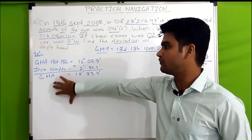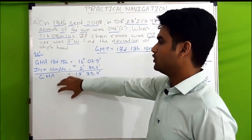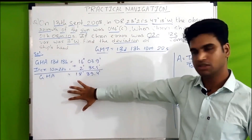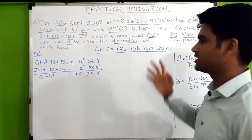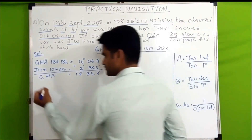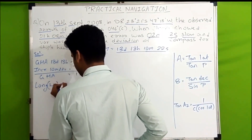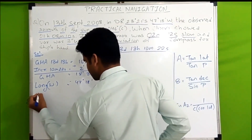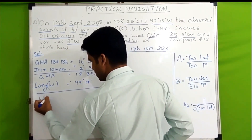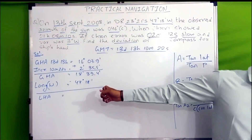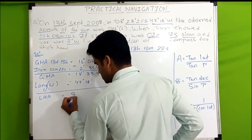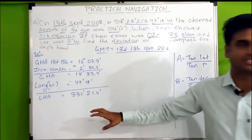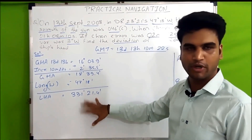Now we find LHA. To convert GHA to LHA, you either add or subtract the longitude depending on its direction. Our longitude is 47° 18' West, so we subtract it from GHA. GHA 18° 39.4' minus 47° 18' — since GHA is less than longitude, we add 360° — gives LHA = 331° 21.4'.